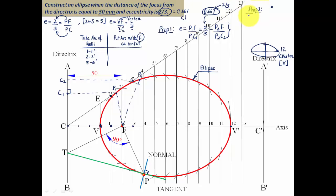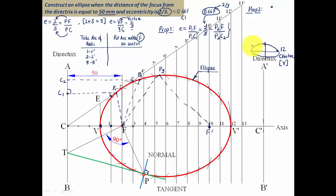Property two: for any point P3 on the ellipse, there are two foci — F on the left and F-dash on the right, each located 20 units from their respective vertices. When you join P3 with F and with F-dash and sum those two distances, P3F plus P3F-dash is always equal to the distance V to V-dash — the length of the major axis.